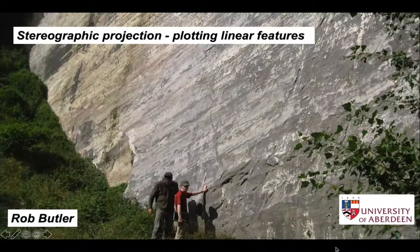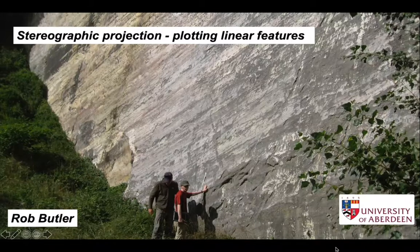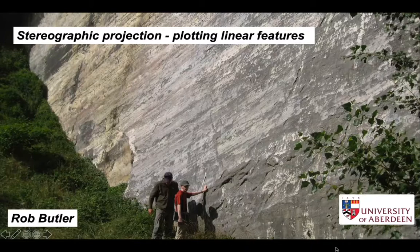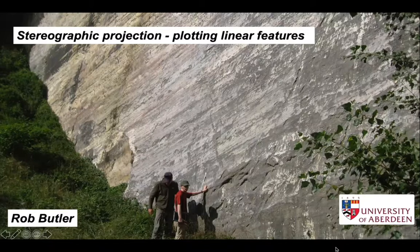In the first presentation on stereographic projections, we looked at how two-dimensional features, planes, could be plotted both as great circles and as poles. But rocks can contain linear features as well as planar features — in other words one-dimensional objects. These might include striations, such as those visible on a fault plane, fold hinge lines, and away from structural geology, flute casts on the bottom of some sandstone beds are another example of linear features.